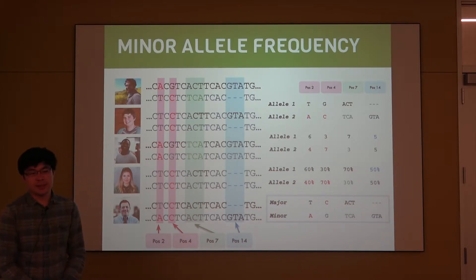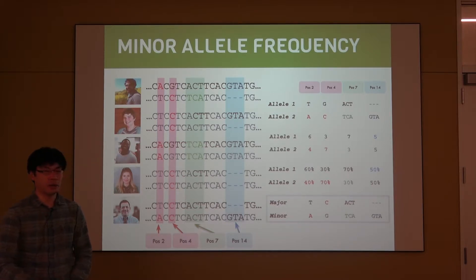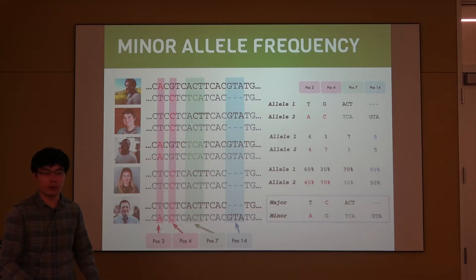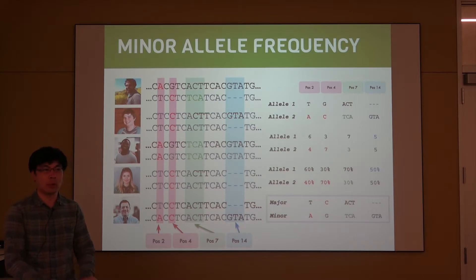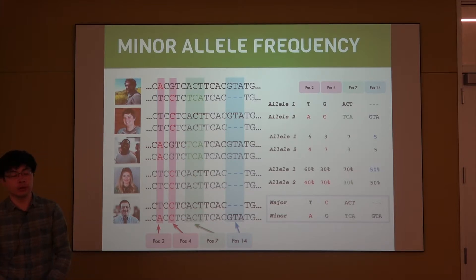But there are certain SNPs or variants that have very, very low frequencies. They can get down to 10%, 5%, 1%, and even lower — you could have even just one individual out of a population that has that allele.